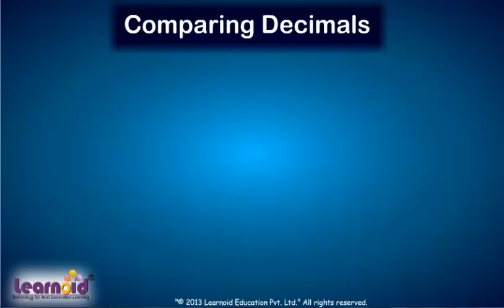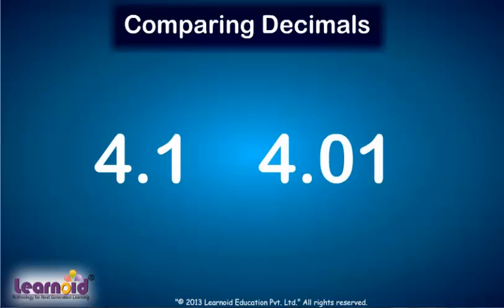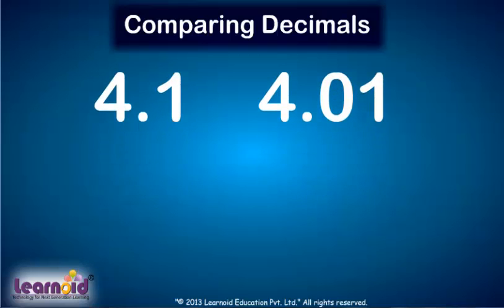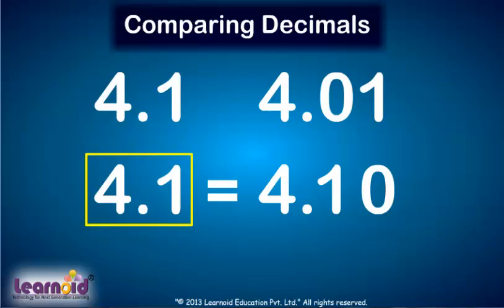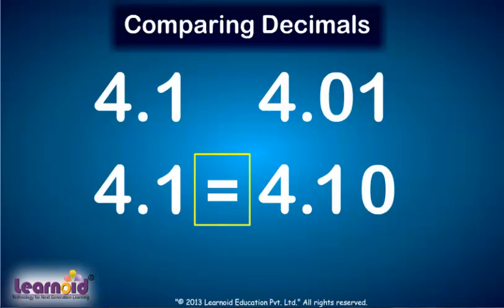Let's compare 4.1 and 4.01. 4.1 has 1 digit after the decimal. 4.01 has 2 digits after the decimal. Now make both numbers have 2 digits after the decimal point. We know that adding 0 to the right of the last digit after the decimal will not change the value. So to make 4.1 have 2 digits after the decimal, we add 0 on the right: 4.1 is equivalent to 4.10.